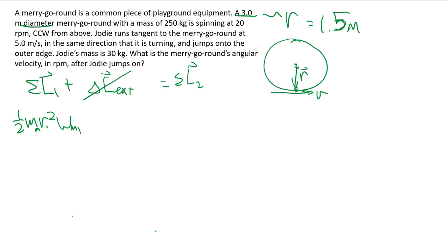So when you take the cross product using your right hand rule, r cross v would give you an angular momentum that's out of the page, which would be counterclockwise, same as the merry-go-round itself.